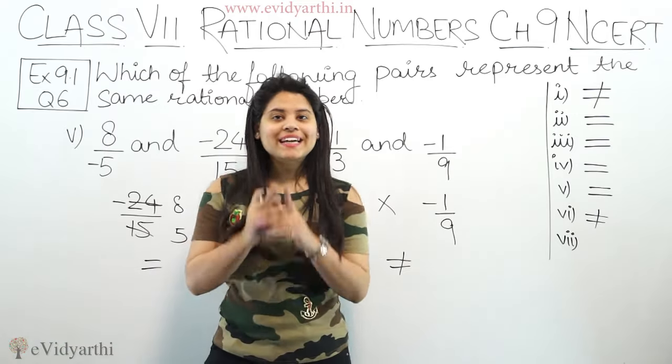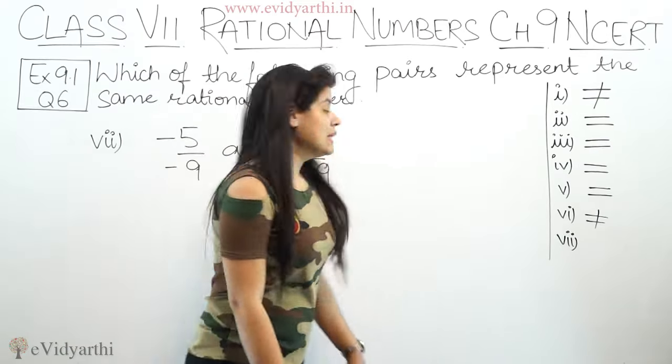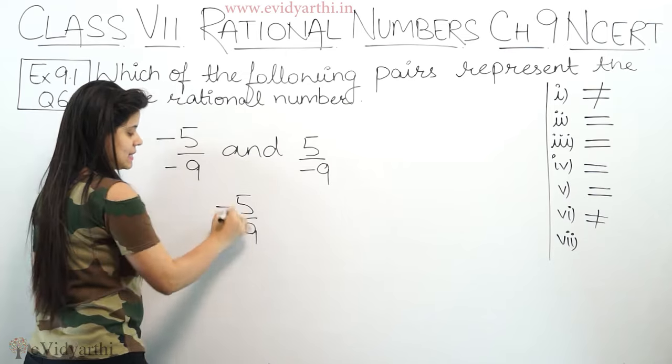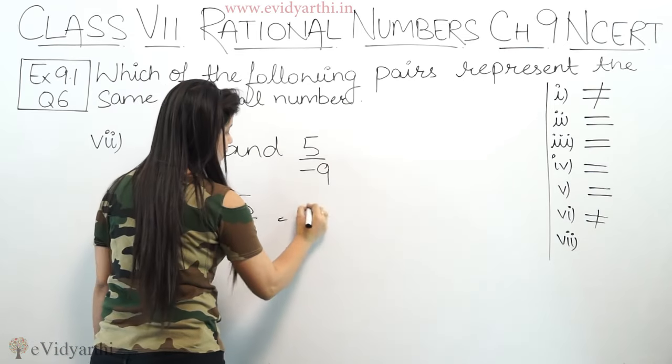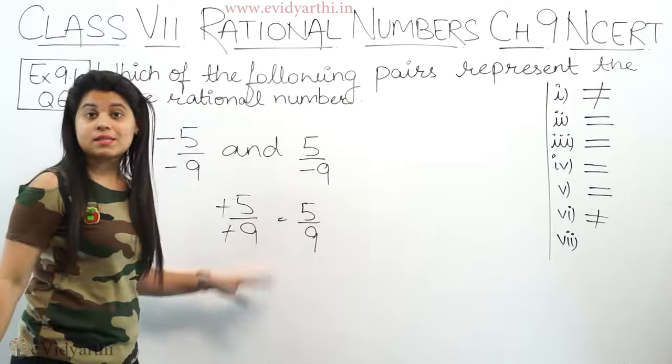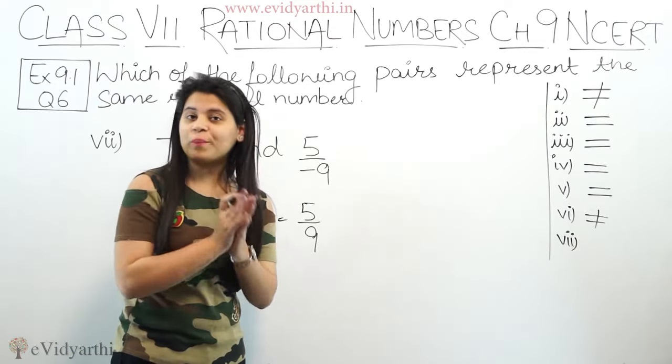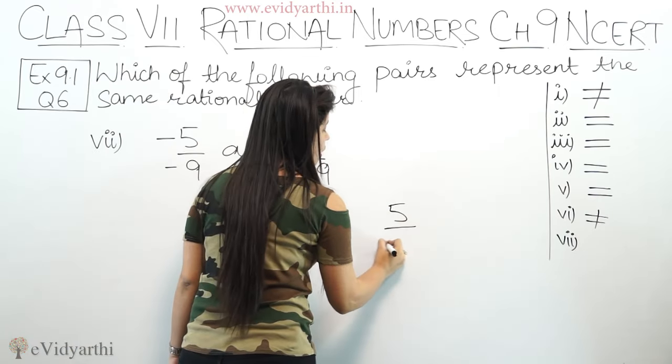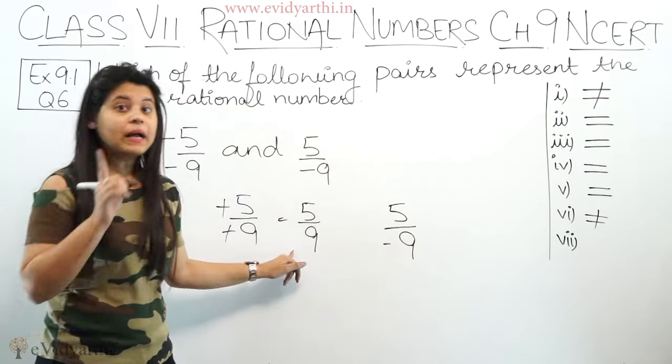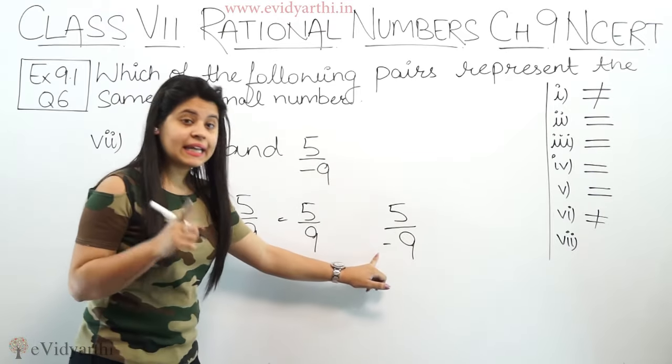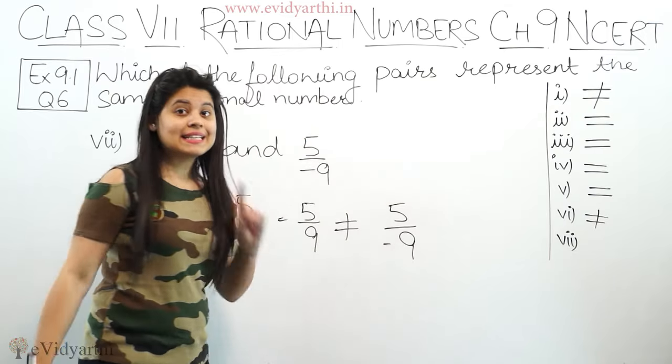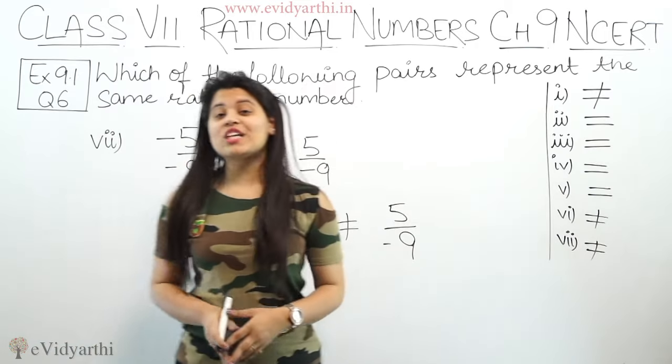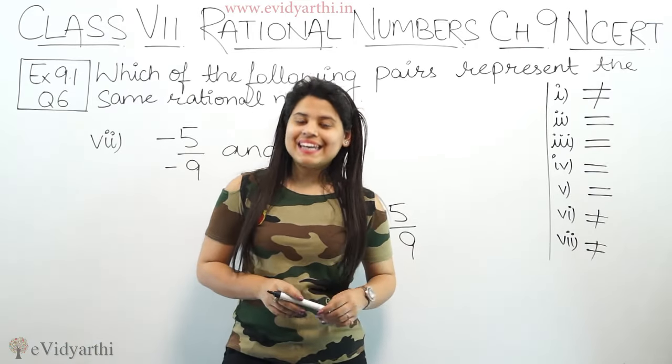Coming to the last part, we have minus 5 upon minus 9. Minus and minus cancel, this becomes 5 upon 9. It's already in simplest form, cannot be converted further. Next we have 5 upon minus 9. You can see this number is positive and this number is negative, so they are not the same rational numbers or not equal. This was question number 6. Let's come to the next question. See you soon, thank you.